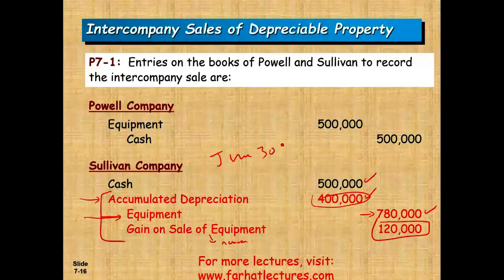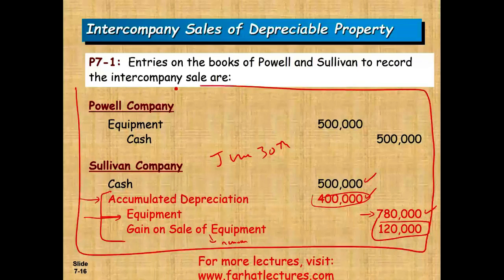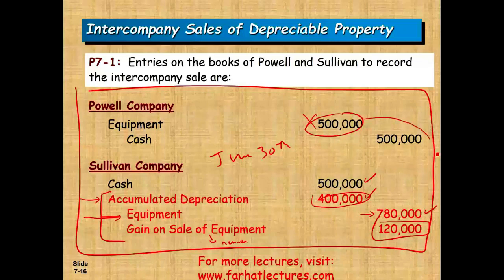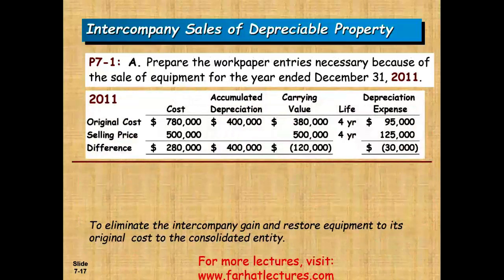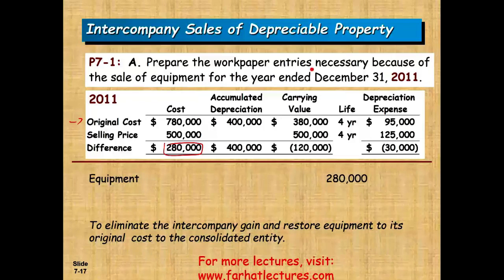At year end, we prepare consolidated financial statements. The equipment now sits on P Company's books at $500,000, which is incorrect — it needs to be reported at $780,000. The original cost was $780,000, and the selling price was $500,000, a difference of $280,000. So the equipment is worth $280,000 less on the books. We must debit equipment $280,000 to restore it. This is December 31st, 2011.